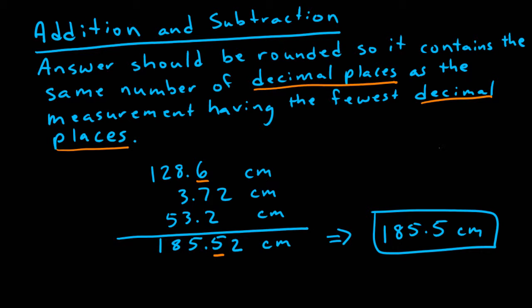To illustrate why the rules are different for addition and subtraction, notice what happens if we change 3.72 to 3.73. The answer changes out in the hundredths place. But if we change 128.6 to 128.5, we can see that the answer changes in the tenths place. Consequently, if one of the measurements has fewer decimal places, then the calculated answer will have fewer decimal places as well.